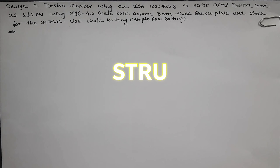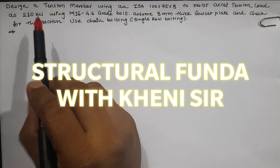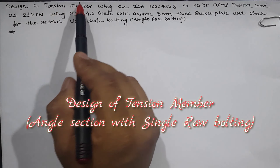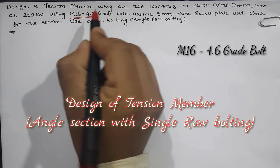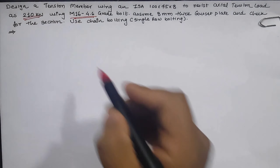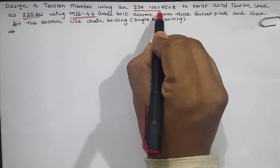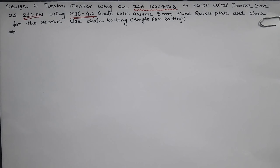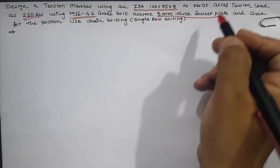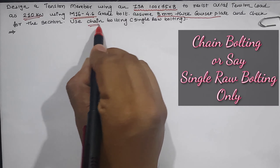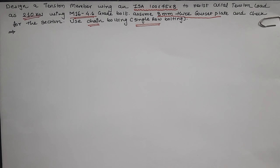Hello friends, welcome back to my YouTube channel Structural Funda. I'm Ethan Kenny and today we are going to learn about the design of a tension member using an M16 4.6 grade bolt for a given design load. We have been given the ISA section 100×75×8 mm with an 8 mm thick gusset plate. We have to use chain bolting, which means it must be a single row bolting.